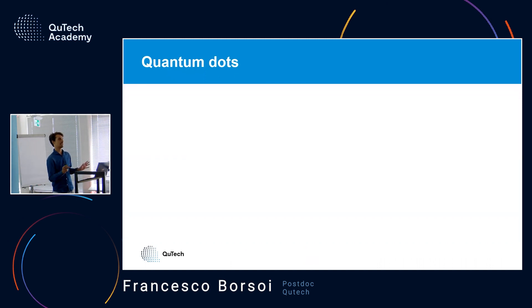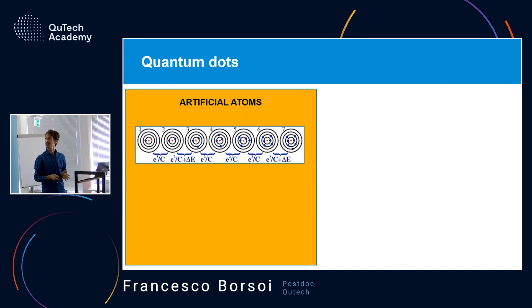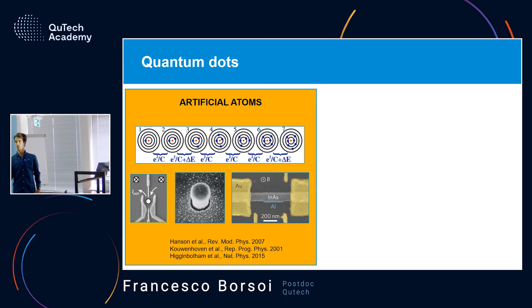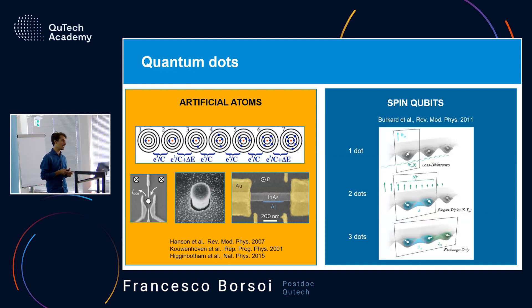Quantum dots have been used a lot in quantum technology with broad implementations of various types. One of their beauties is that the energy spectrum is discrete and can be engineered by choosing the proper material, size, and dimensionality. Over the last 20–30 years we've seen implementations starting from quantum dots in planar two-dimensional electron gas materials, in vertical nanostructures, and in one-dimensional channels such as nanowires.